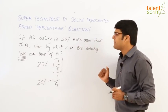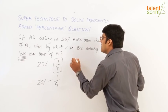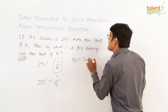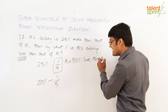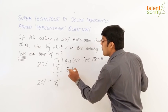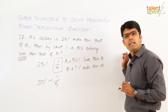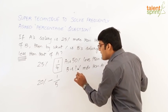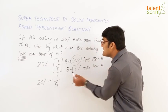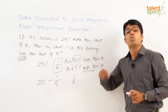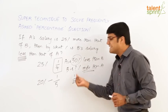Let us look at another similar example. Let us say A's salary is 50% less than B. So how much percentage more than A is B's salary? A is 50% less than B — B is what percentage more than A? The keyword here is 'more', so we need to increase the fraction. 50% is 1/2. Since we want more, we increase the fraction.